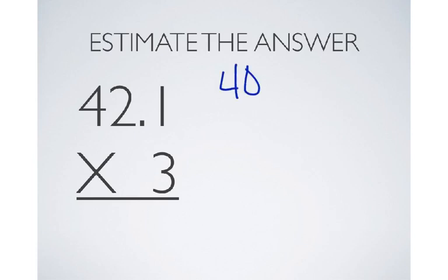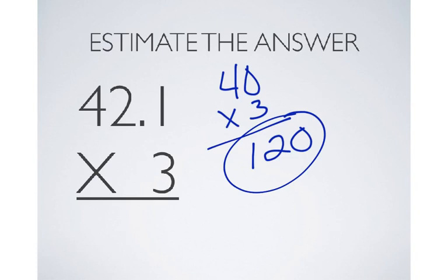We're going to leave the 3 as it is, and we'll multiply those two together. This should be mental math, but I'll write it out here for you. 4 times 3 is 12, tack on the 0. So, our estimated answer is 120.